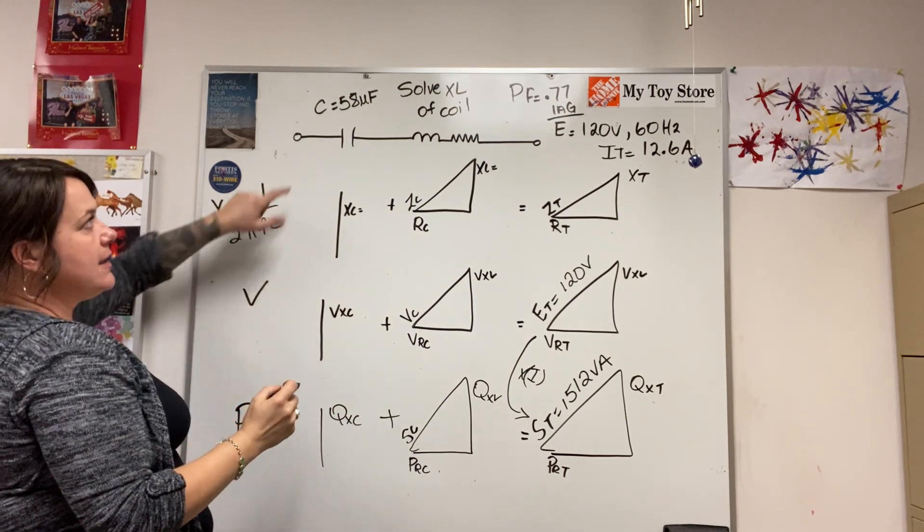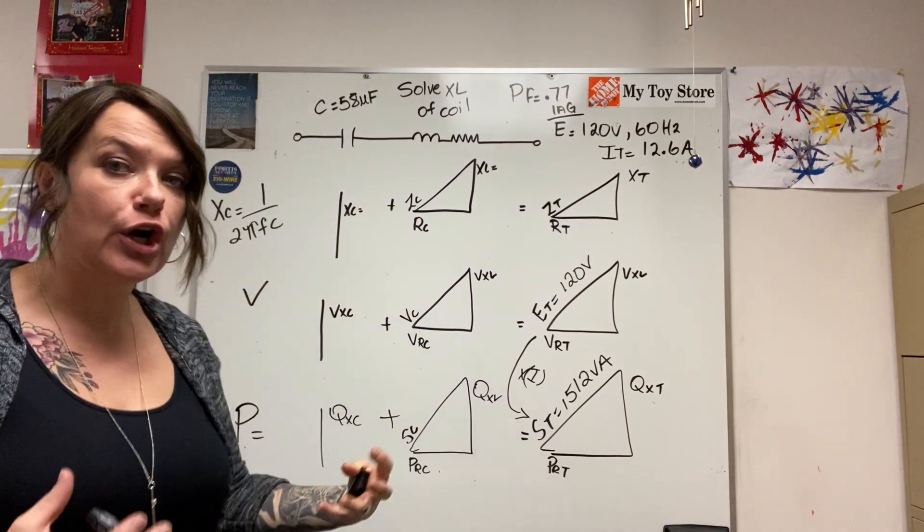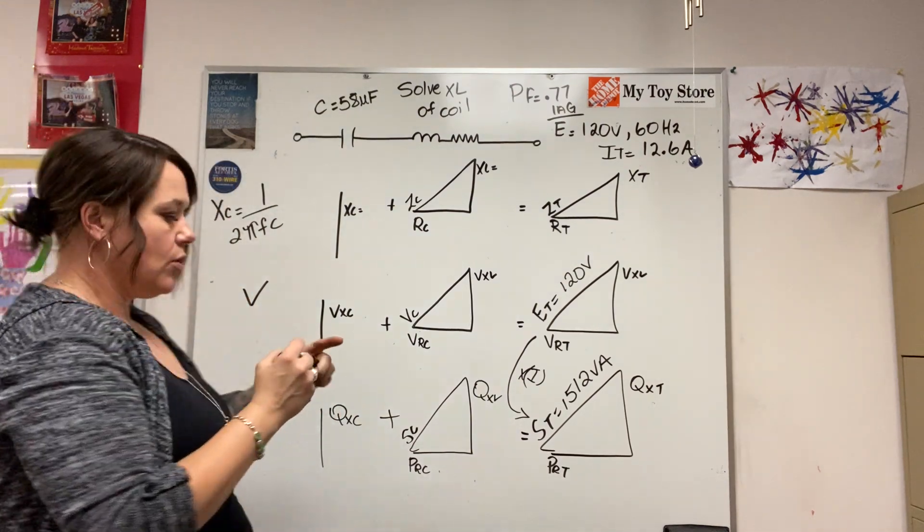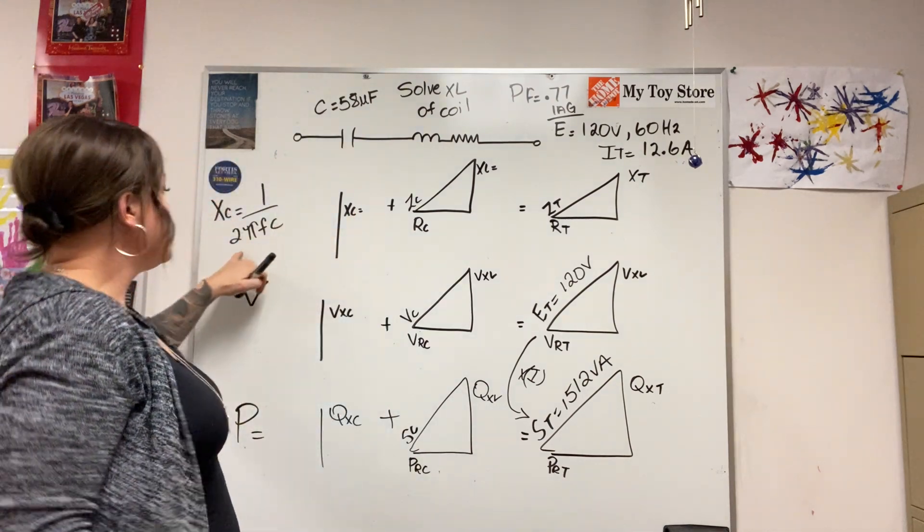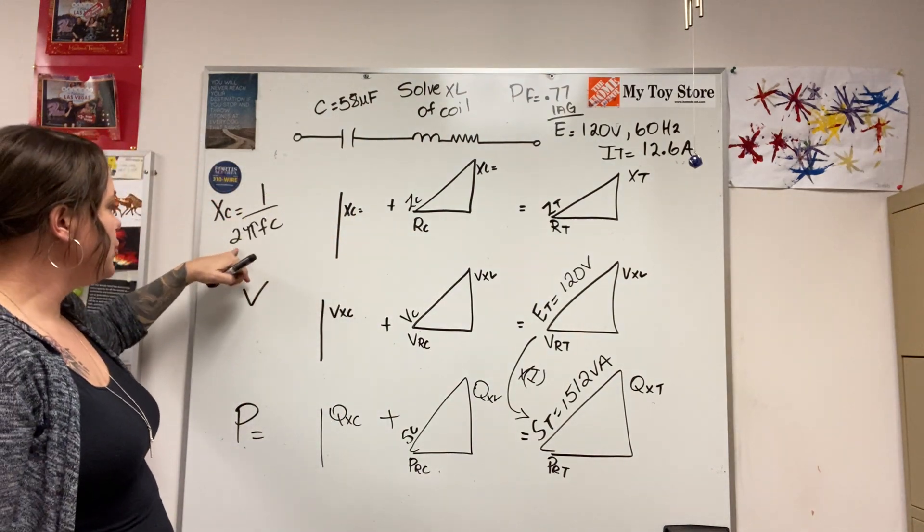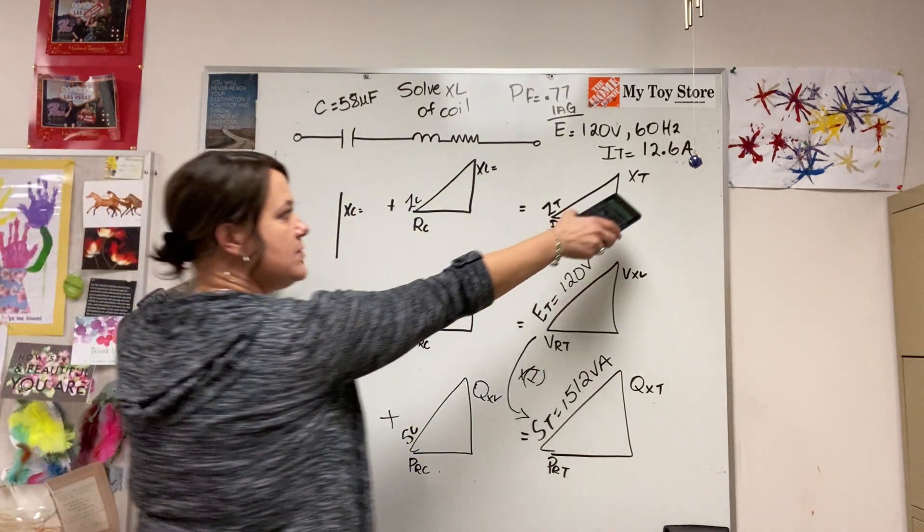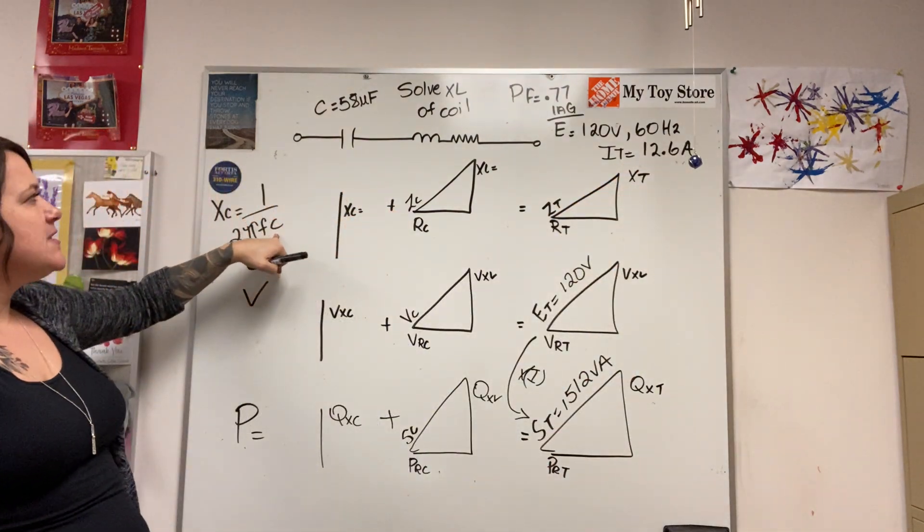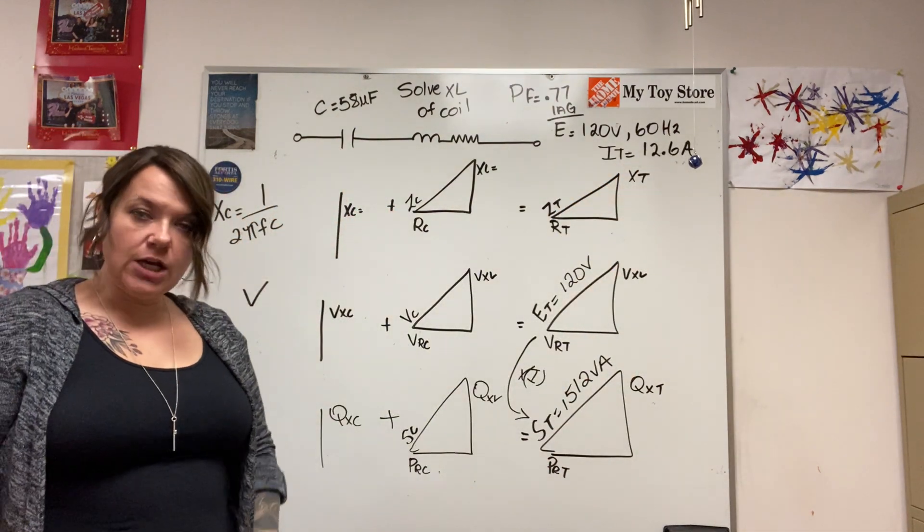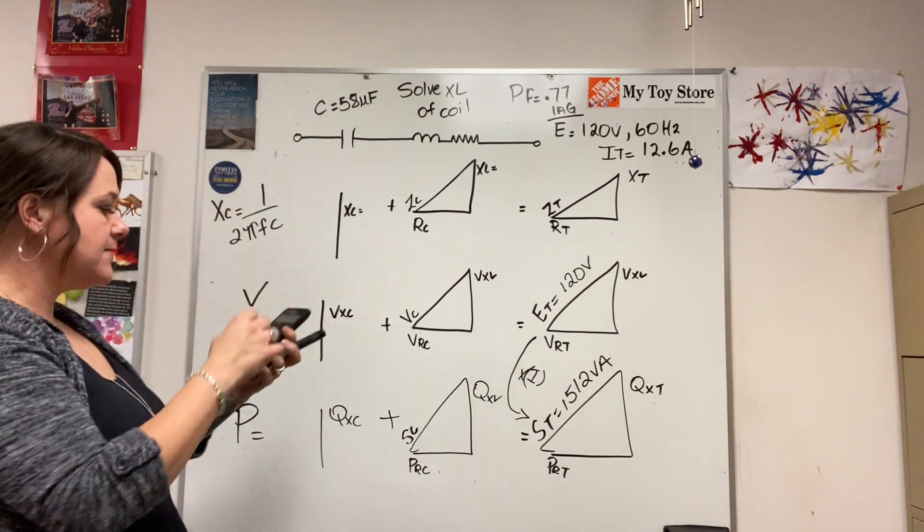So the formula for XC is 1 over 2πFC. Capacitors are rated in microfarads because a farad is a very large unit of measurement. So I'm going to find that out. I'm going to go 1 divided by 2 times π, frequency was given 60 hertz, times 58.